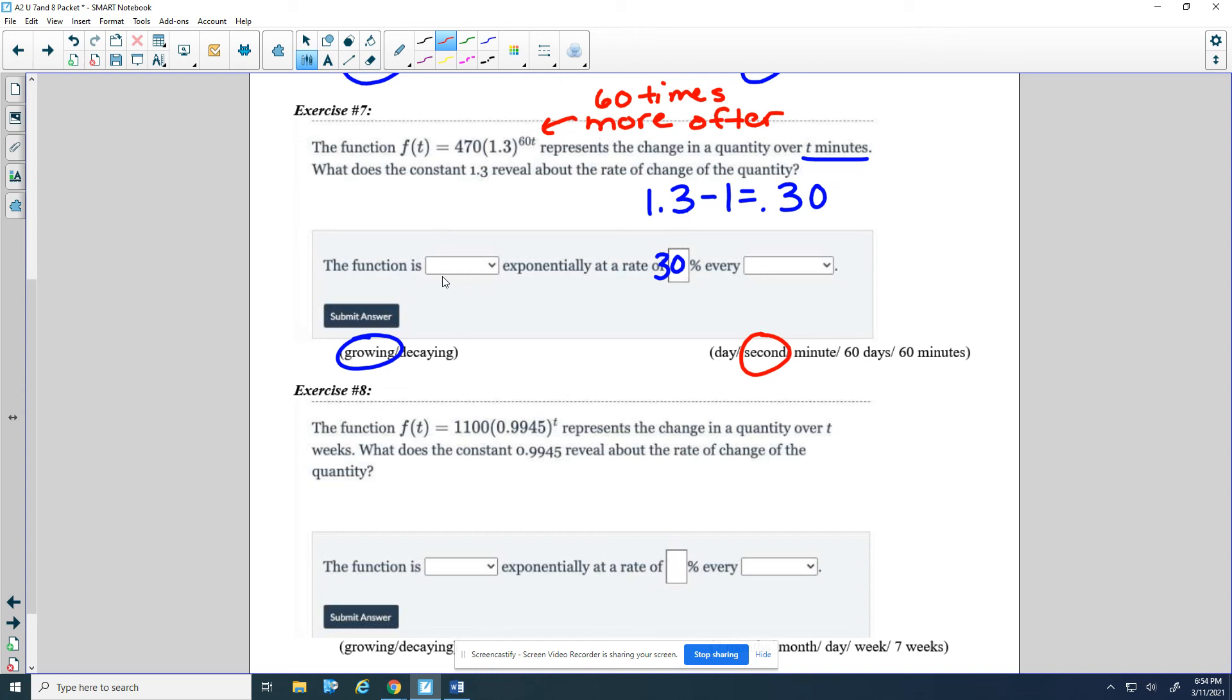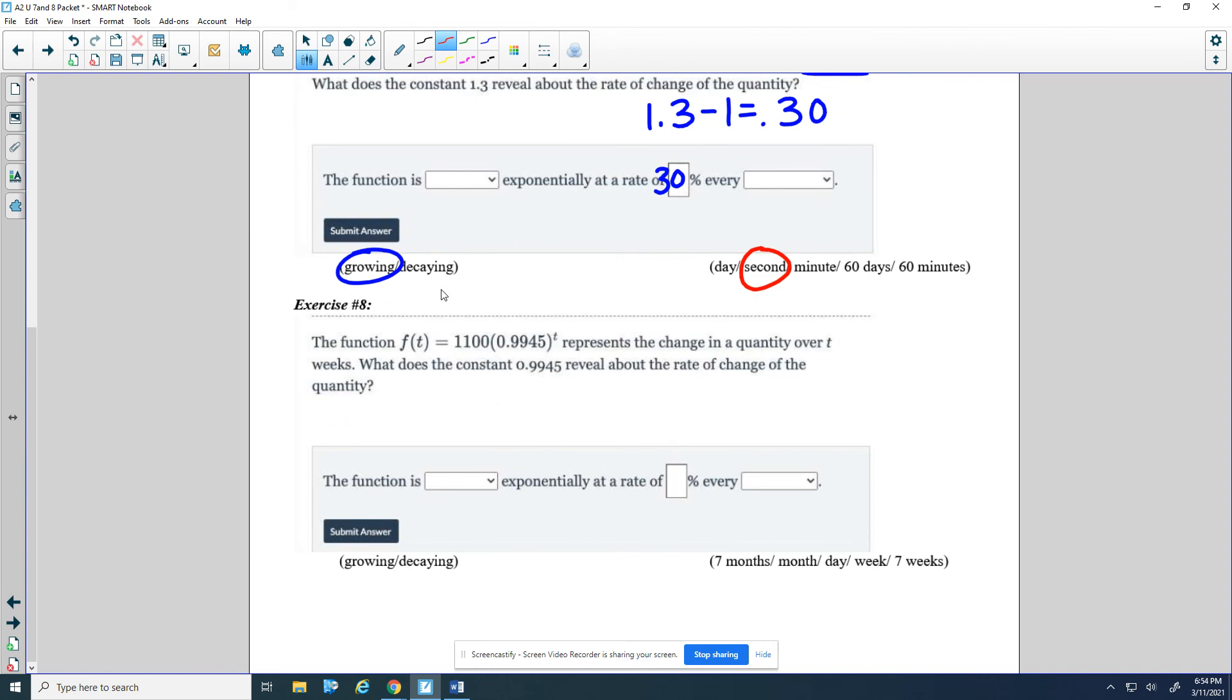Last one, and as I said, really good idea to pause the video to make sure you do these, because these are kind of tricky to think about. So now we have 1,100 times 0.9945 to the t represents the change in quantity over t weeks. What does the constant 0.9945 reveal about the rate of change of the quantity? Okay, so here we are decaying, because it's less than 1 at a rate of 0.0055. So move the decimal, that's 0.55% every. Now, this is not a trick question. t is just t, so t is just weeks.